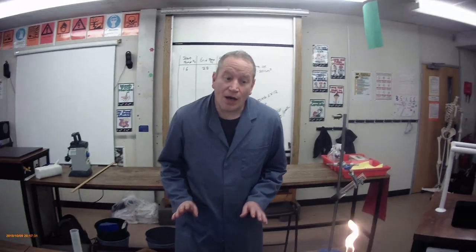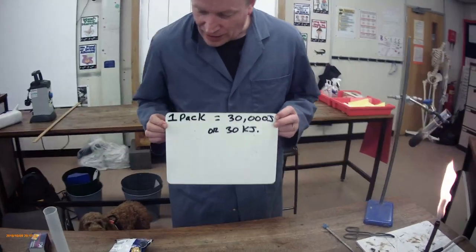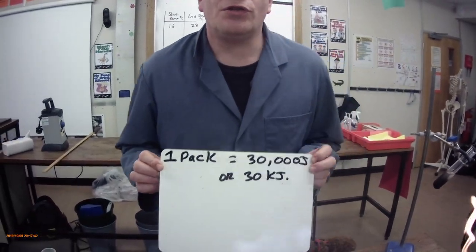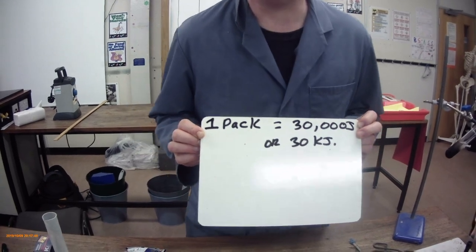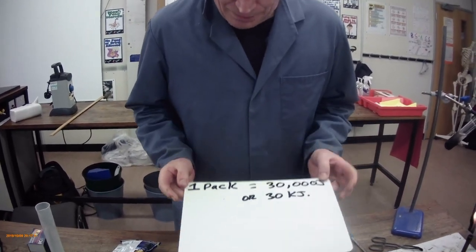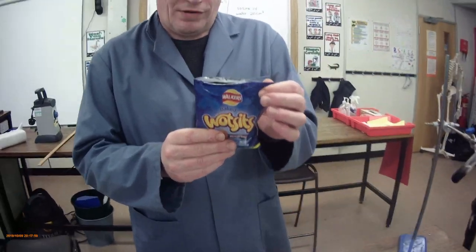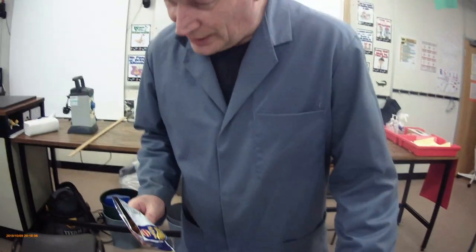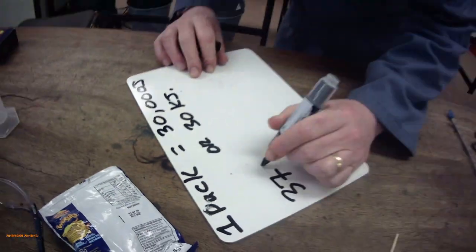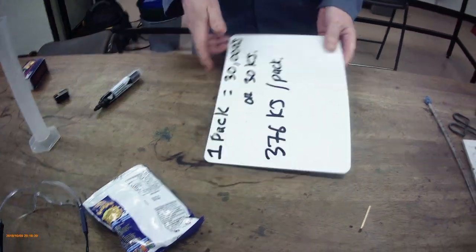Let's go back to the lab. What we've done, we've worked out from this simple combustion experiment of a crisp, that one pack of these crisps contains 30,000 joules of energy or 30 kilojoules. How does that compare to the back of the packet? By law all food in this country has to tell you exactly what the nutritional values are. It says 376 kilojoules per pack.